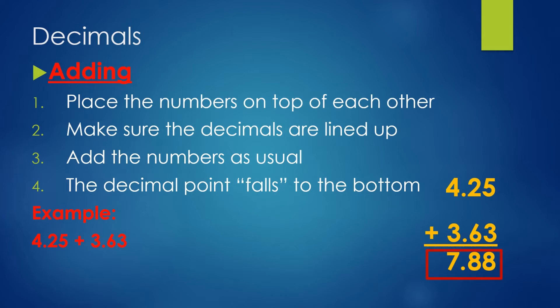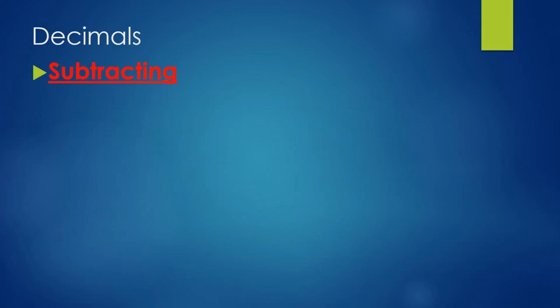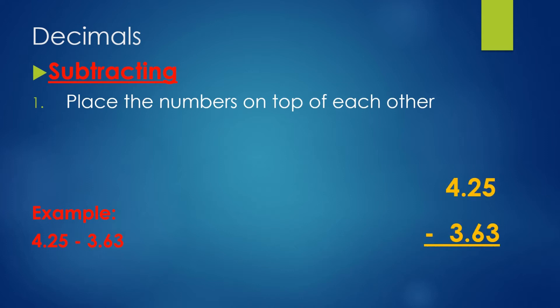Now let's look at subtracting decimals. It's going to work very much the same way. First we're going to place the numbers on top of each other. For this example we'll use the same numbers and subtract them, 4.25 minus 3.63. We place them on top of each other and make sure that the decimals are lined up.